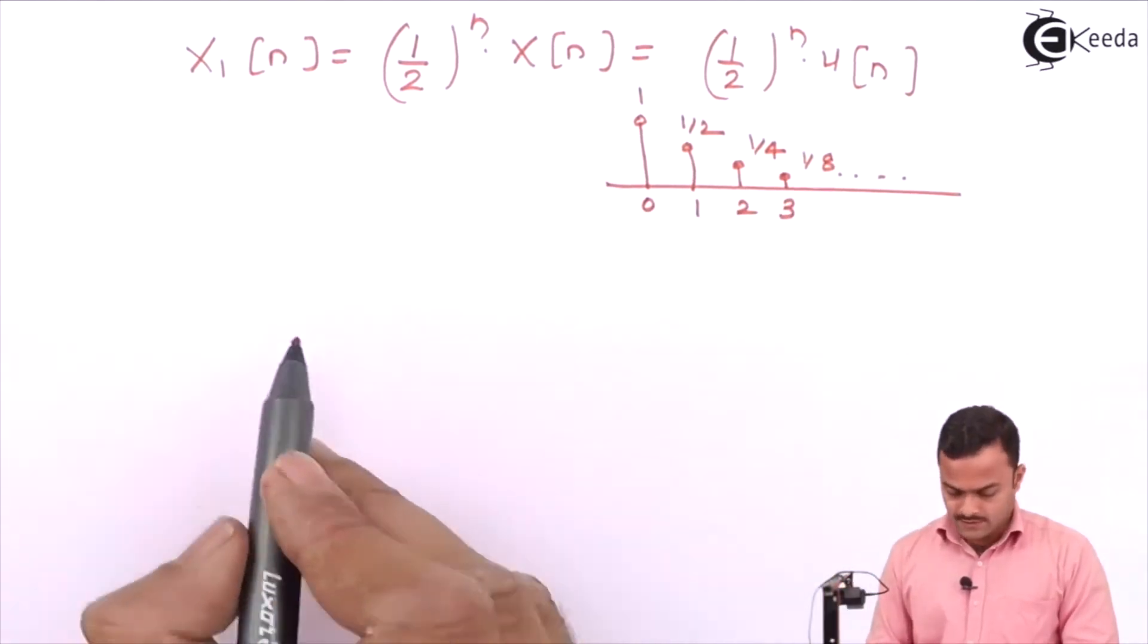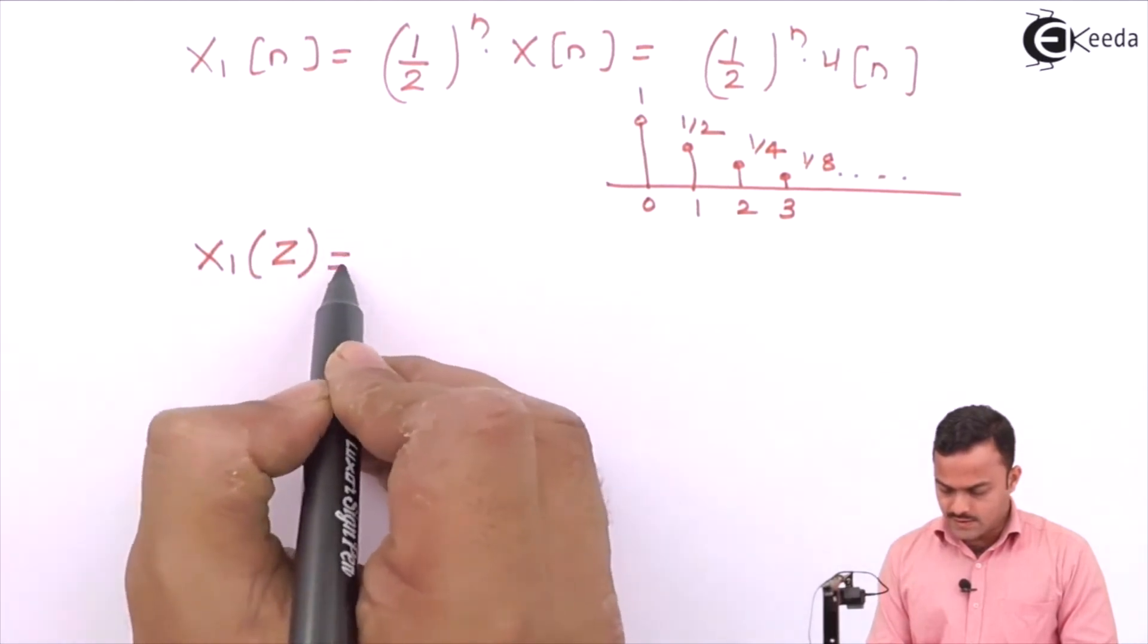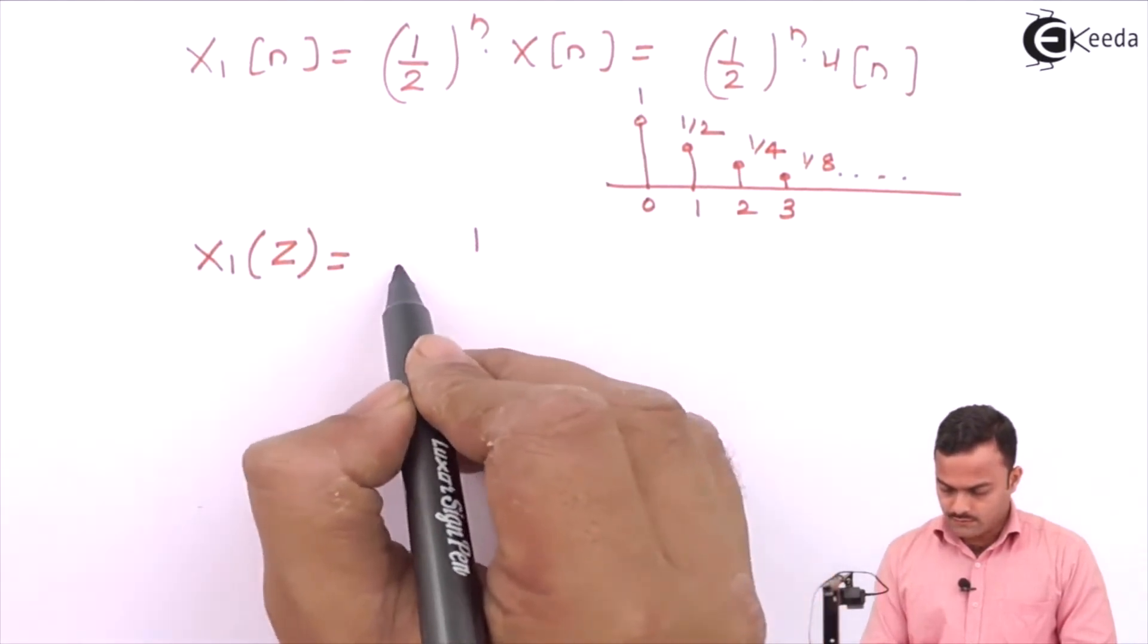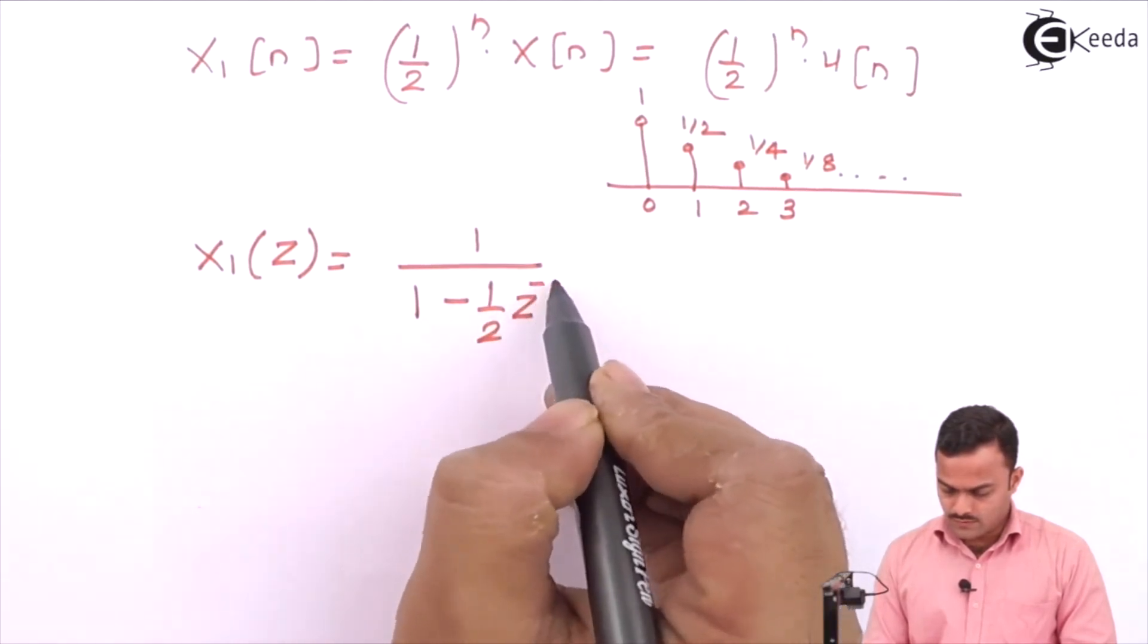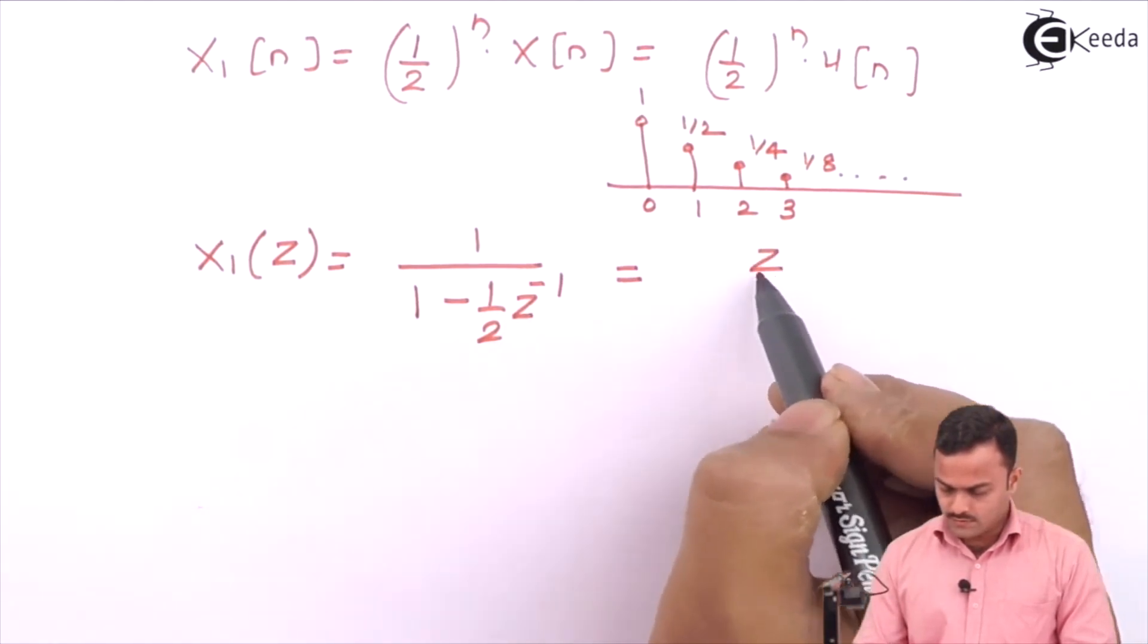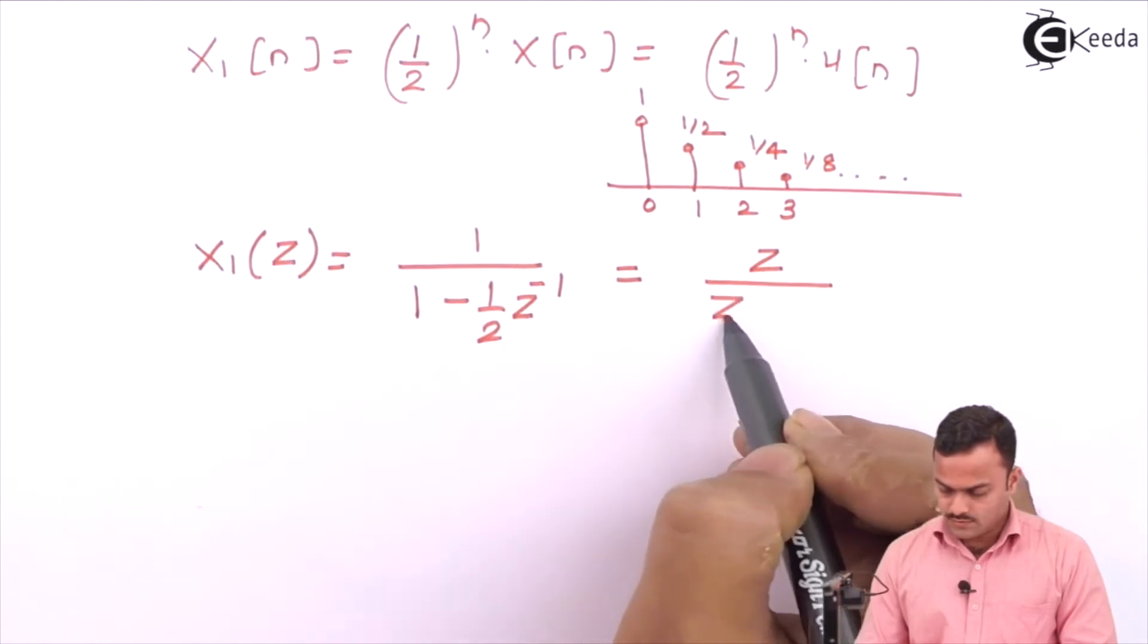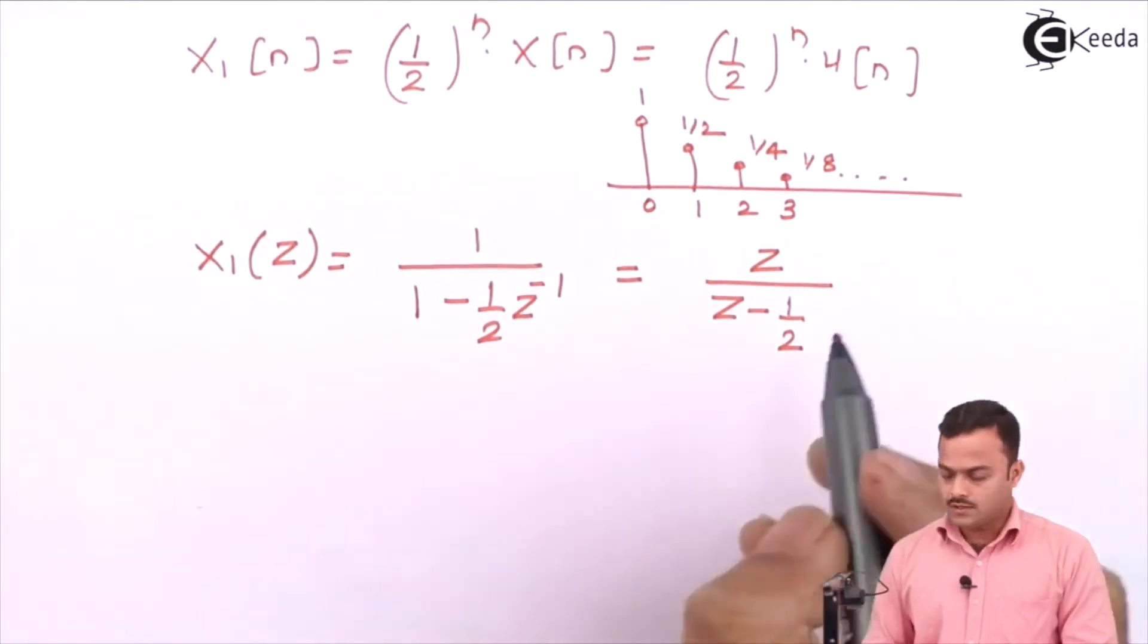For this signal, we know X1 of Z as a Z transform is 1 upon 1 minus 1 by 2 Z inverse, which is nothing but Z upon Z minus 1 by 2. And what is ROC?